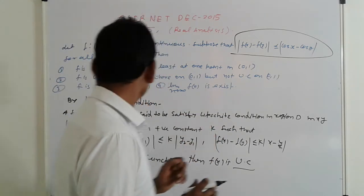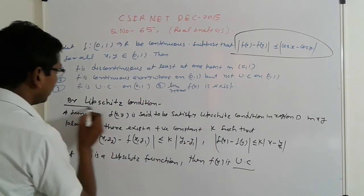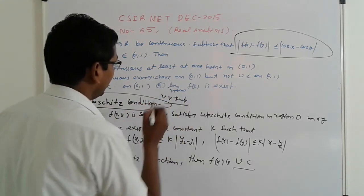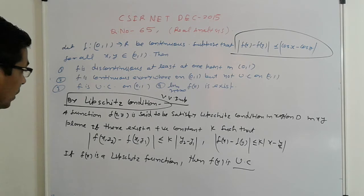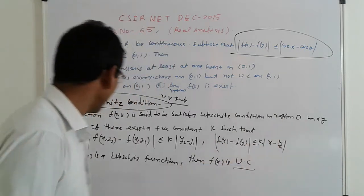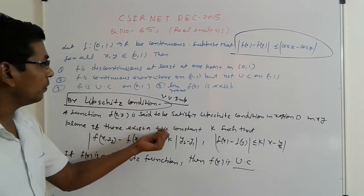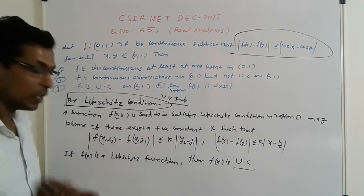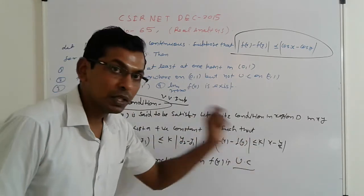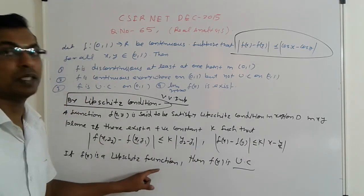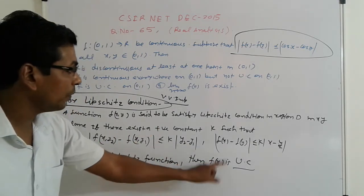This is the Lipschitz condition, which is very important. A function f(x,y) is said to satisfy the Lipschitz condition in region D in the xy plane if there exists a positive constant k such that it follows that rule. If it follows that rule, we can say that f(x) is a Lipschitz function and then f(x) has uniform convergence.